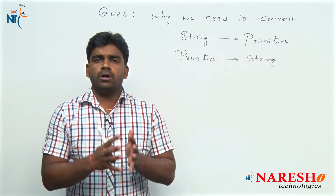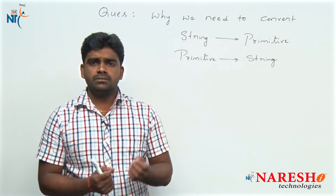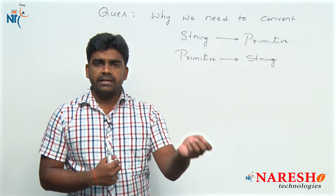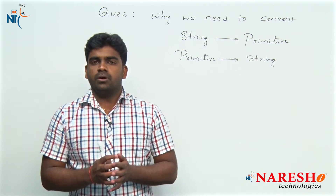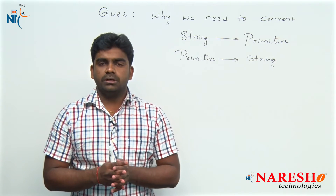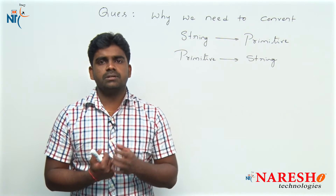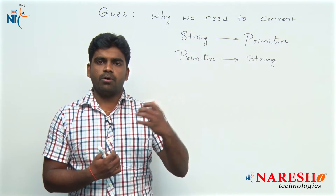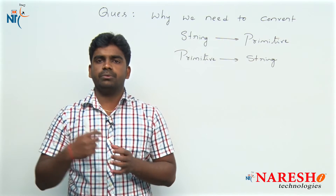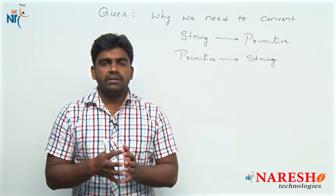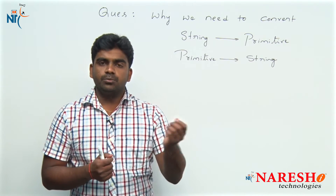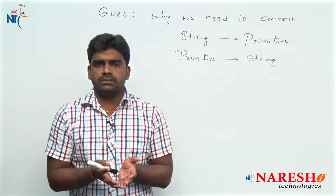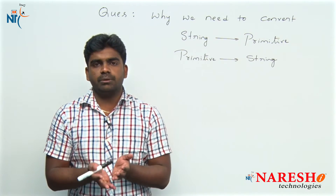If you want to work with a primitive type, just collect the primitive type only. Or if you want to work with a string, just collect the string only. Why are we collecting input as a primitive and converting into a string type, or collecting as a primitive and converting to a string? That is the question people will definitely ask.